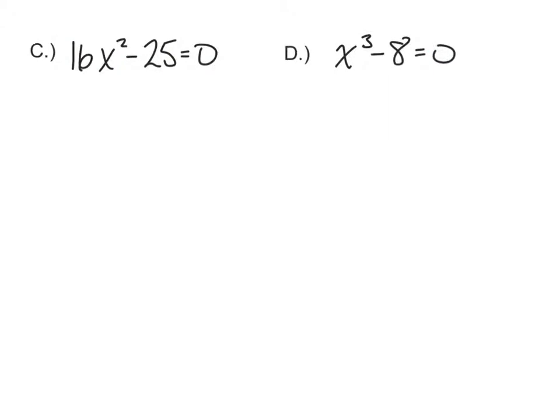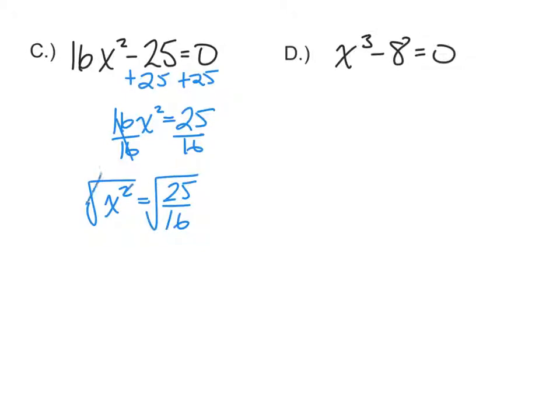Now if we have 16x squared minus 25, the first thing we're going to do is get that x squared alone, so add 25 to both sides. And divide by 16. Now that we have that x squared alone, we're going to take the square root of both sides. Since we put the square root in, it's going to be plus or minus. And then just take the square root of 25, which is 5, and the square root of 16, which is 4.